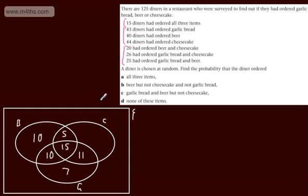And then what we've got left now is 44 had ordered cheesecake. So cheesecake is in here. And we've got a total now of 31. So this is going to end up being 13.